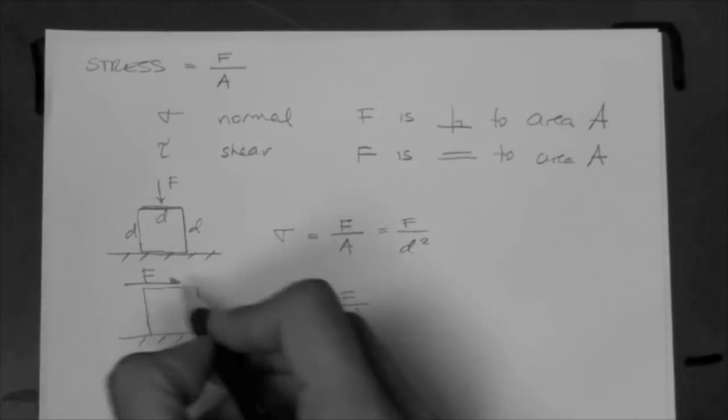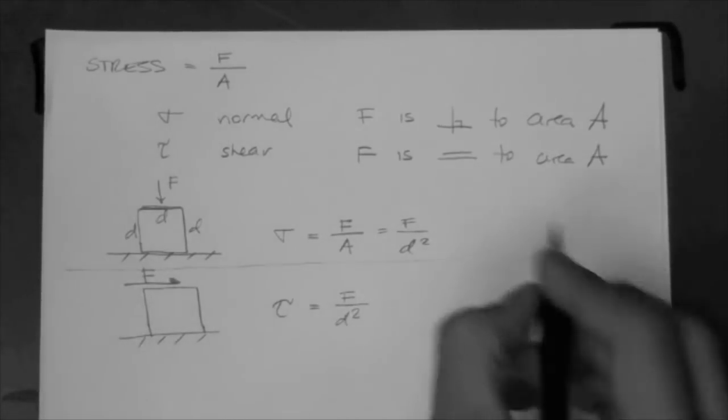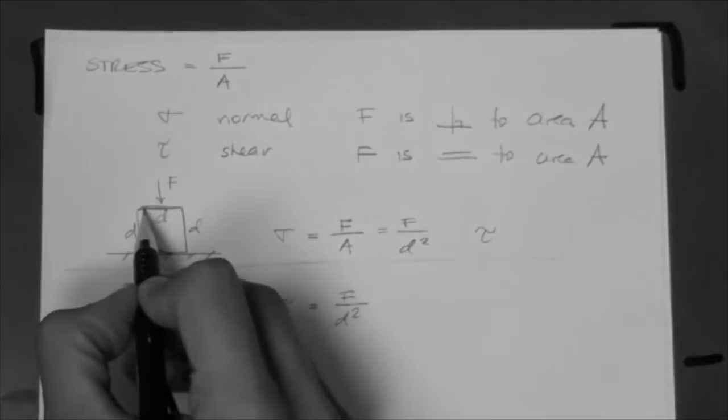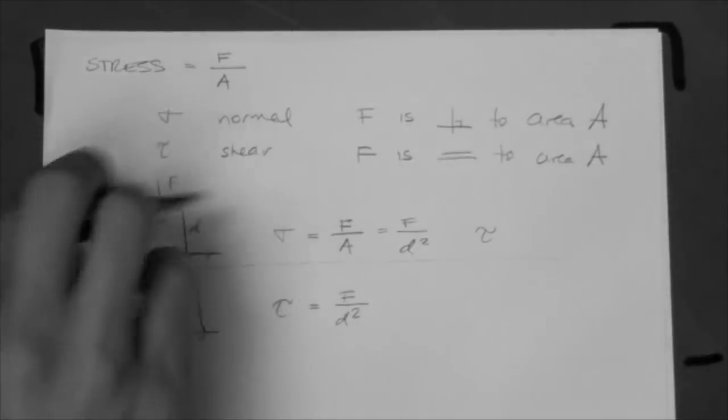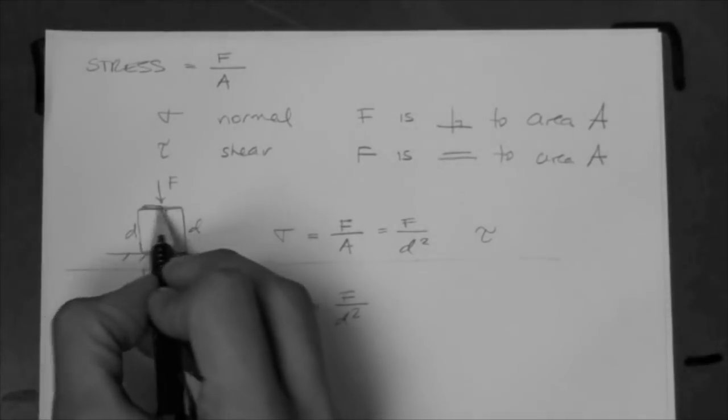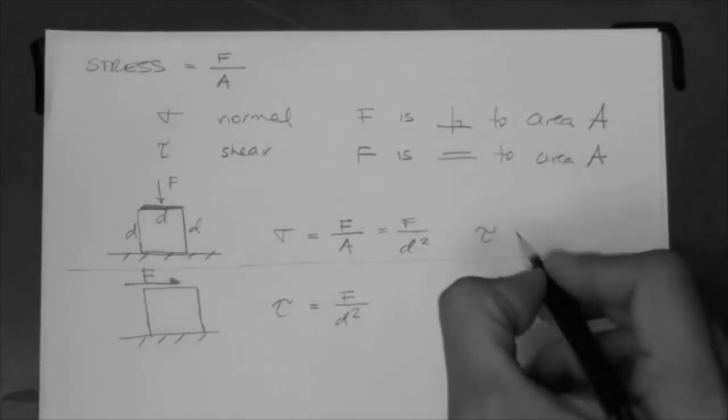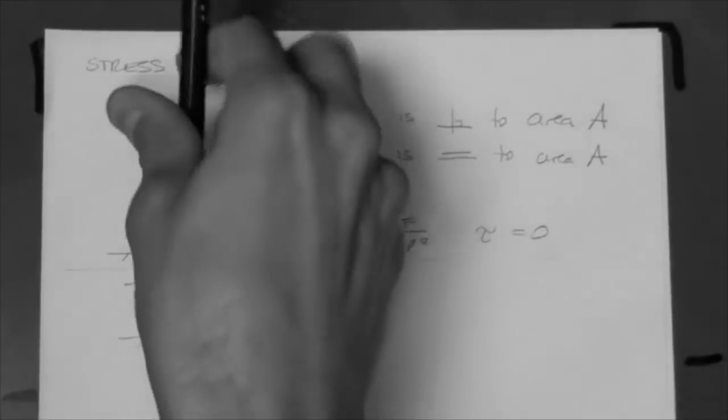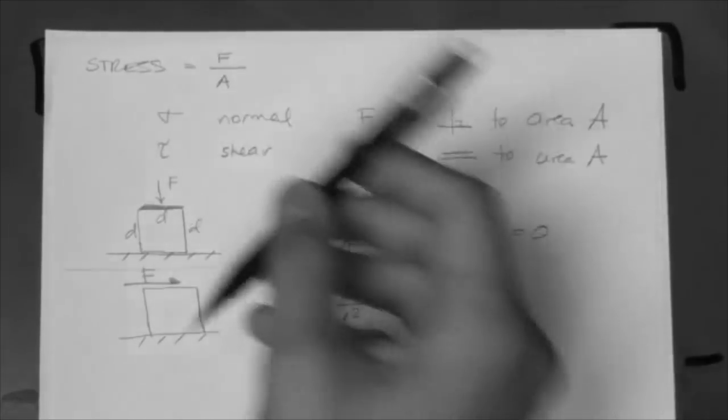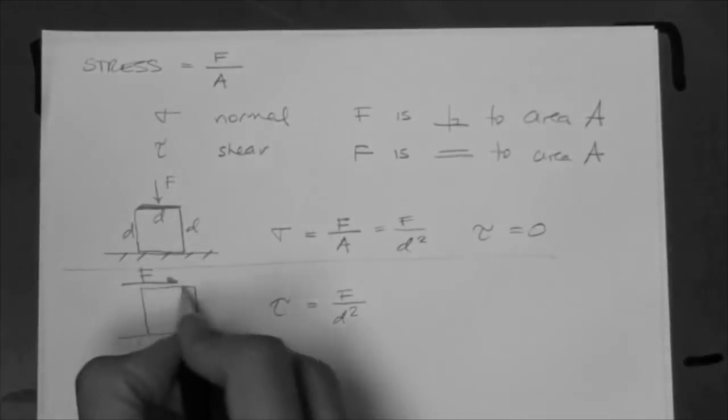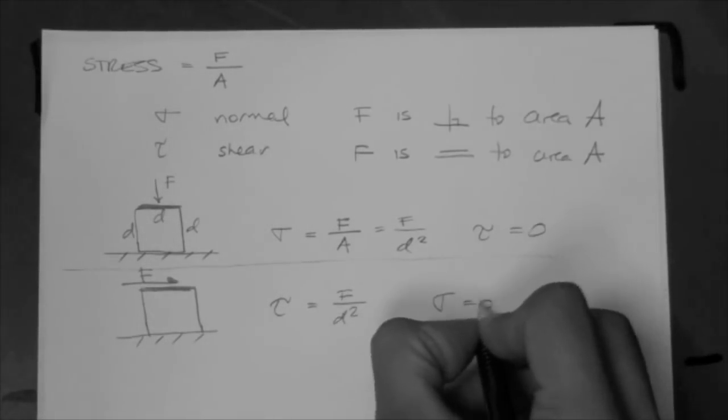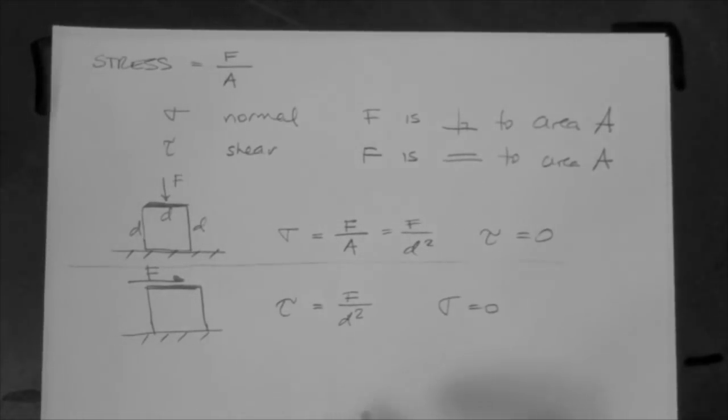So, in this case, of course, the F, these are two different examples. In this case, tau acting laterally on this surface is zero, because there's no force acting there. And, in this case, there's no vertical force. There's no force normal to this plane, or to this side of the cube. So, in this case, sigma is zero, for example.